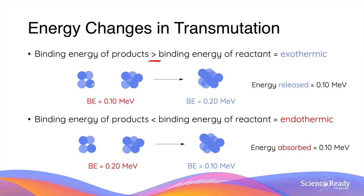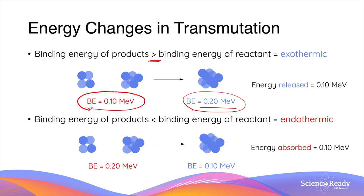The binding energy of the newly formed nucleus from the fusion is 0.2 MeV. 0.1 MeV of binding energy in the reactants means we need to put in this amount of energy to break apart the nucleons before we can form the product. When the particles are broken, they can then form the product, and this releases the binding energy of the product, which is 0.2 MeV. Overall, we have more energy being released from the reaction than what was originally going in, resulting in a net 0.1 MeV of energy released — hence why the reaction is described as exothermic.